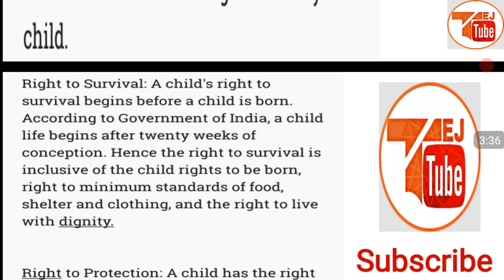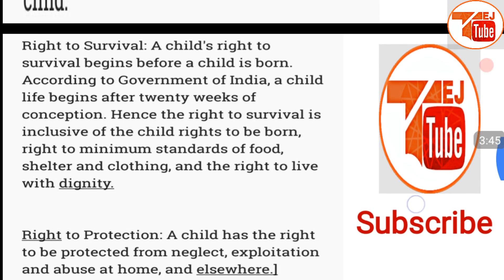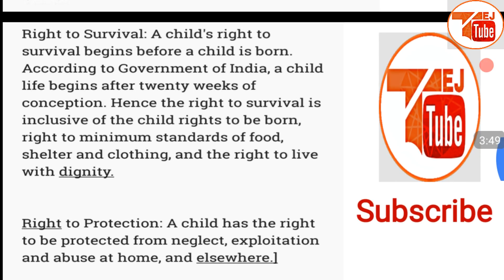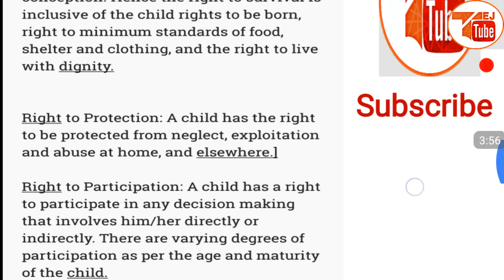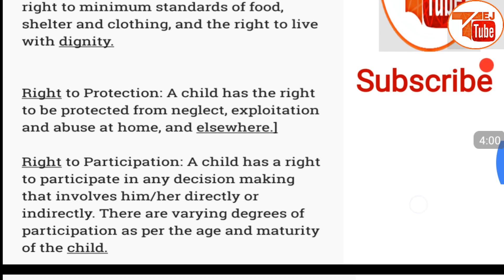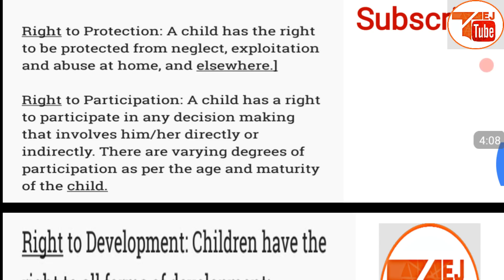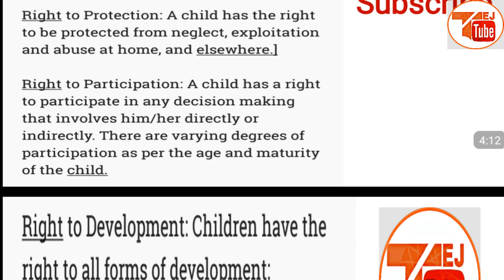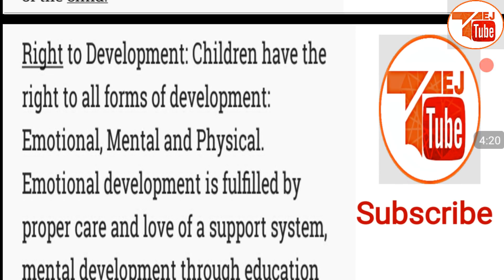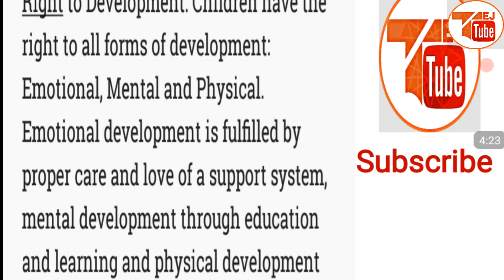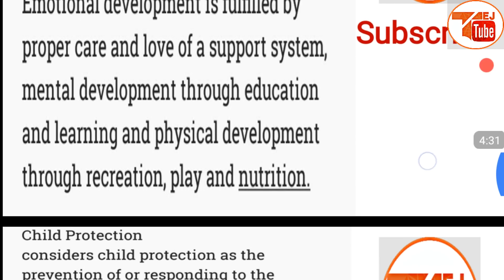The right to survival begins before a child is born. According to the Government of India, a child's life begins after 20 weeks of conception. Hence, the right to survival is inclusive of the child's right to be born, right to minimum standards of food, shelter, and clothing, and the right to live with dignity. Right to protection: a child has the right to be protected from neglect, exploitation, and abuse at home and elsewhere. Right to participation: a child has the right to participate in any decision-making that involves them directly or indirectly, with varying degrees of participation as per the age of maturity. Right to development: children have the right to all forms of development — educational, mental, physical, and emotional. This includes mental development through education and learning, and physical development through recreation, play, and nutrition.